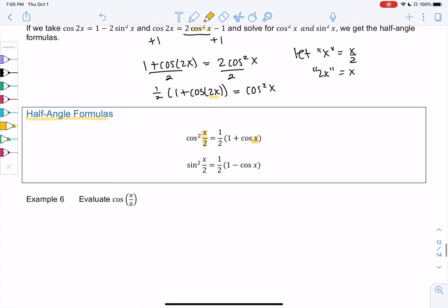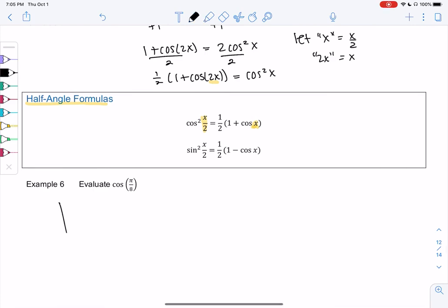So an example here is cosine of pi over 8, and that's useful because we don't know pi over 8, but we do know pi over 4. And so I know that I'm looking for the half angle, but I know the bigger angle. So that's when I would use these formulas.